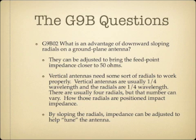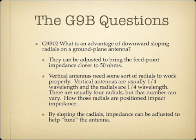What is an advantage of downward sloping radials on a ground plane antenna? The answer is they can be adjusted to bring the feed point impedance closer to 50 ohms. Vertical antennas need radials to work properly, and both the antenna and its radials are usually about a quarter wavelength. How those radials are positioned impacts the impedance. By sloping the radials downward, the impedance can be increased, helping tune the antenna and achieve an impedance match between the feed line and the antenna.